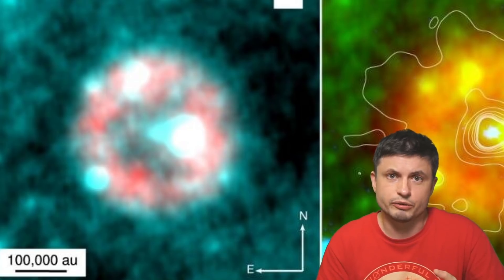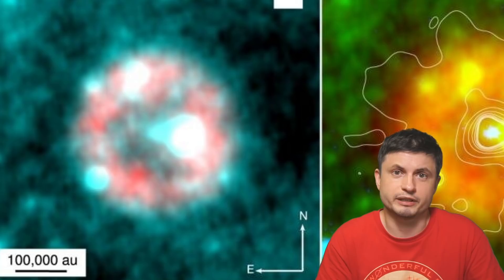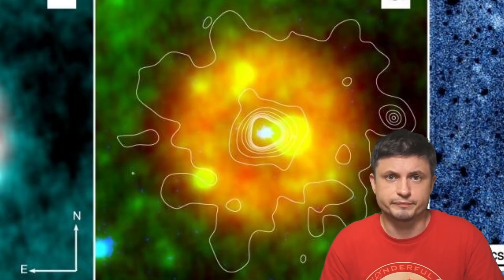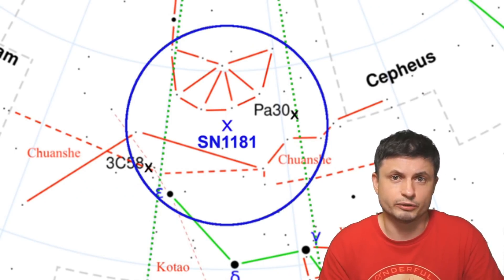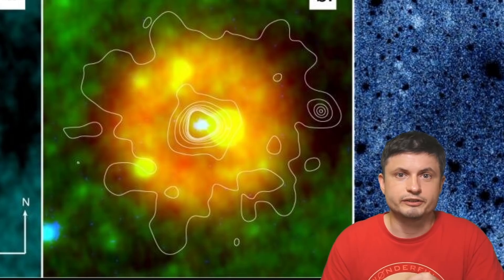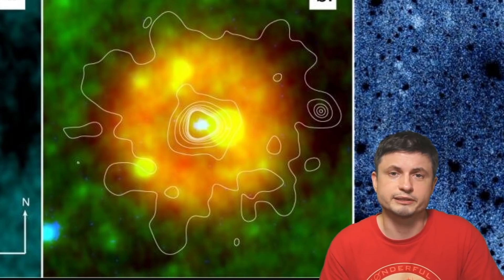Or essentially when this particular nebula was originally produced. And it just so happens that it seems to have an age of about 850 years, naturally coinciding with the supernova seen by the ancient astronomers. And so the fact that it's located in the right area and seems to be the right age only suggests that it's really this nebula right here that produced the original observation from 1181. So I guess mystery solved.